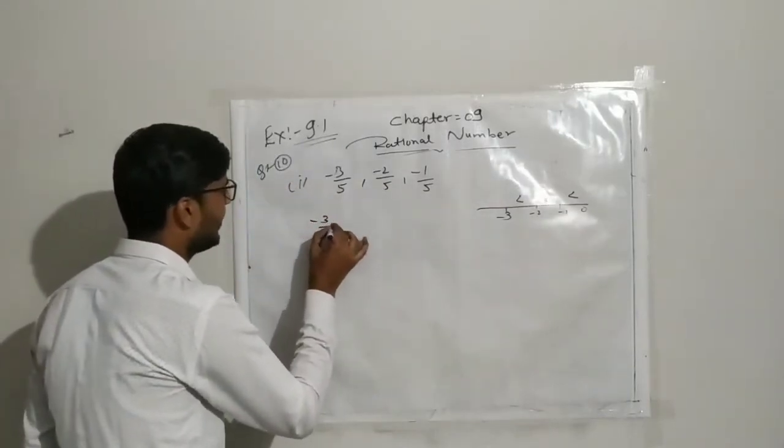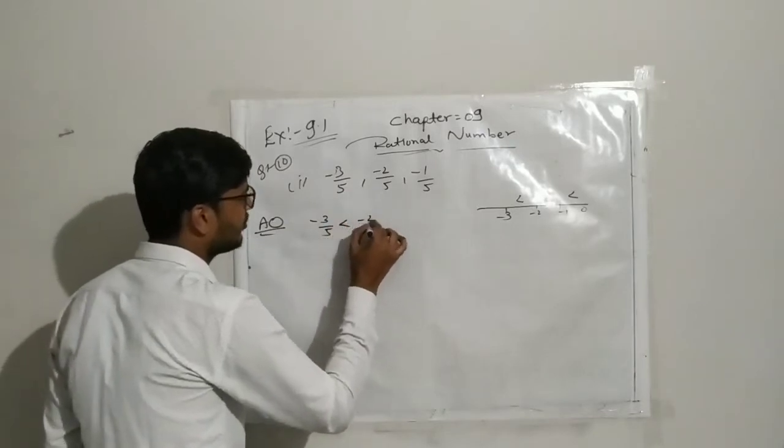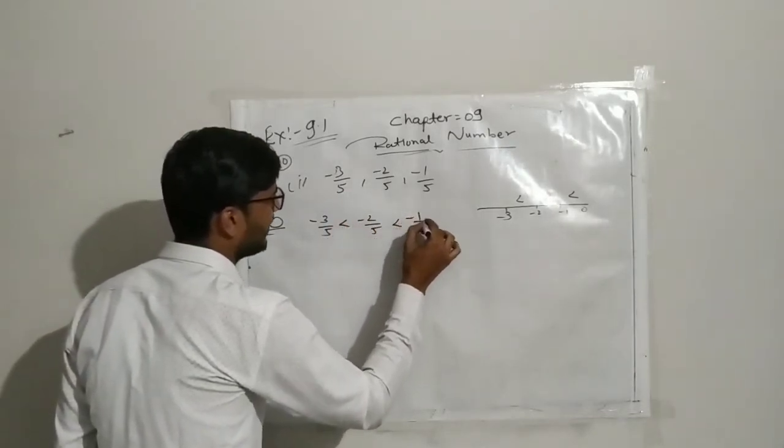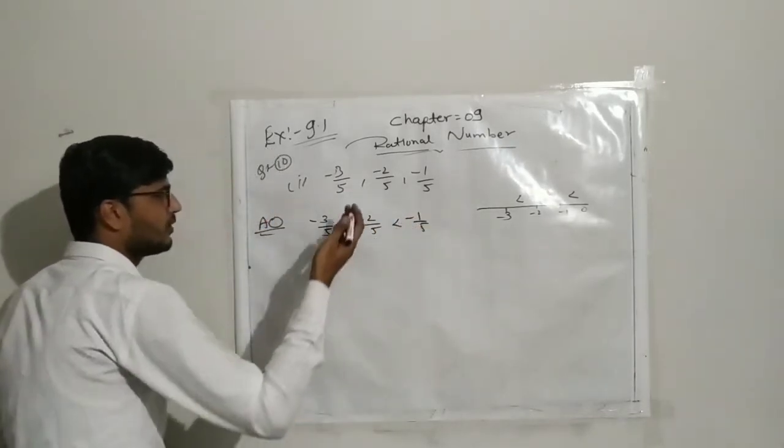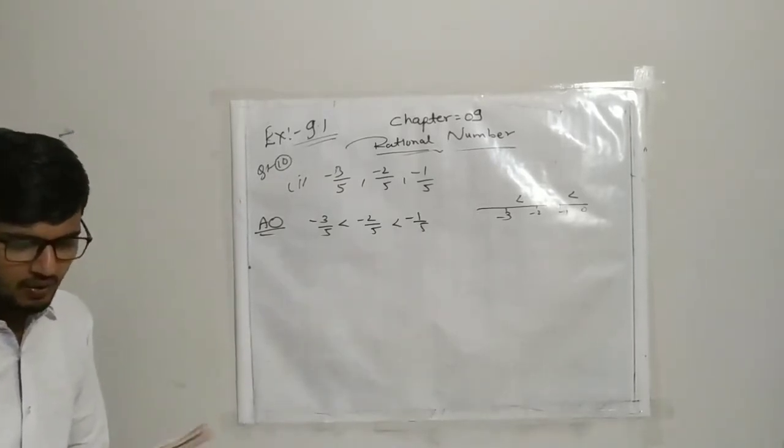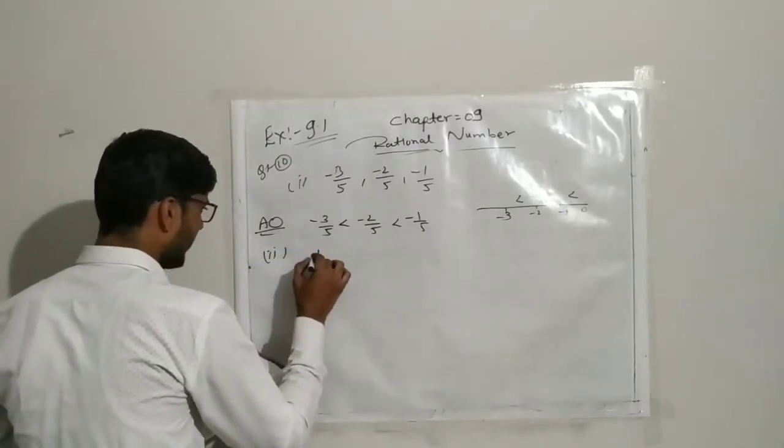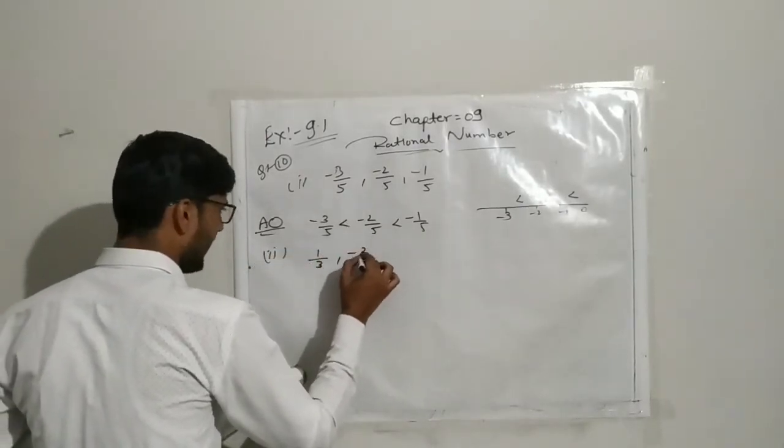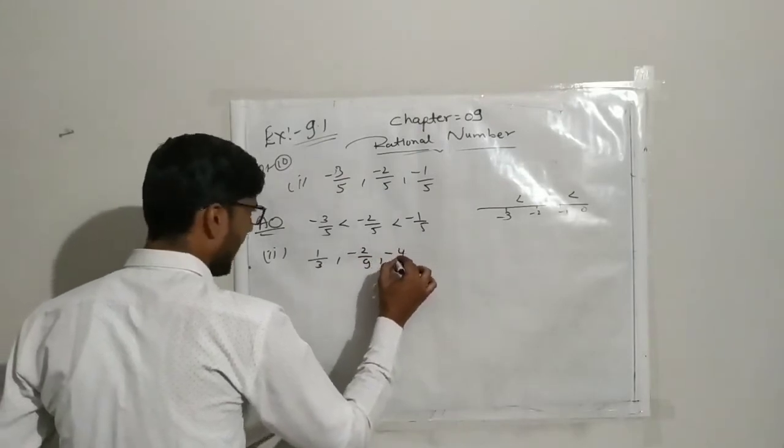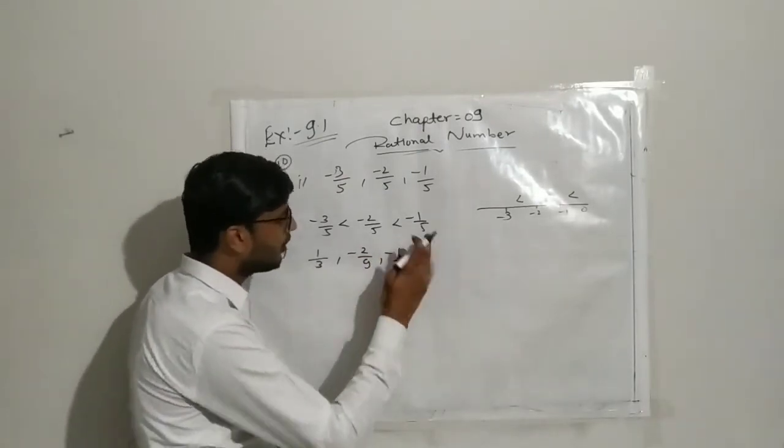So minus 3 upon 5, minus 2 upon 5, less than minus 1 upon 5. These numbers are already arranged in ascending order. Now in question number second: 1 upon 3, minus 2 upon 9, and minus 4 upon 3.